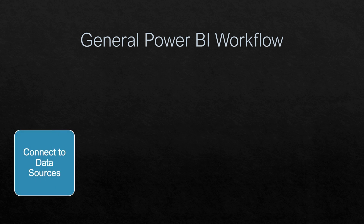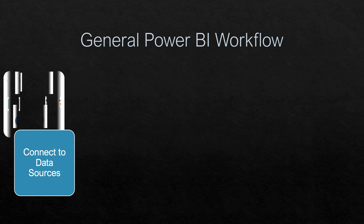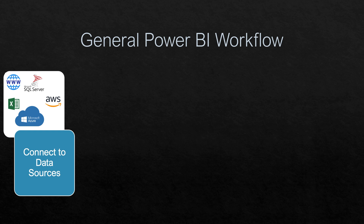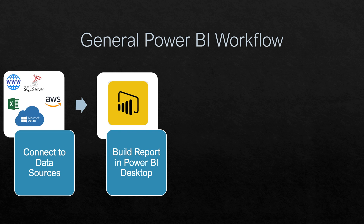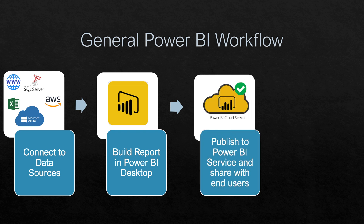Now let's see what the general Power BI workflow looks like. First, in the Power BI Desktop application you connect to your data sources — you can connect to hundreds of data sources including web, SQL Server, on-premise databases, Amazon Web Services, etc. After that, the developer ingests this data into Power BI where they can use Power Query for ETL purposes — transforming and massaging the data. Once everything is done, the report layout is created and then it gets published into Power BI Service to be shared with users.